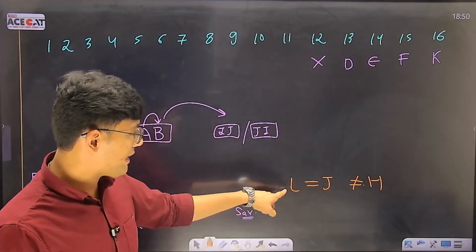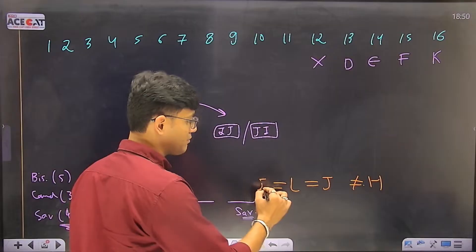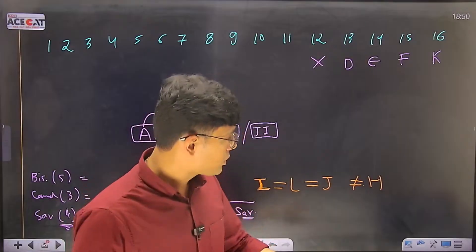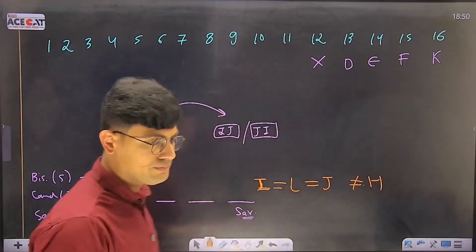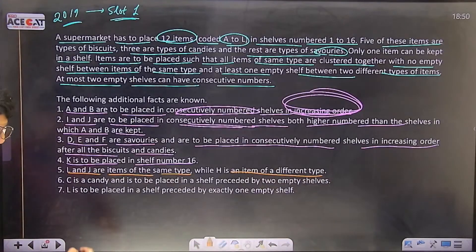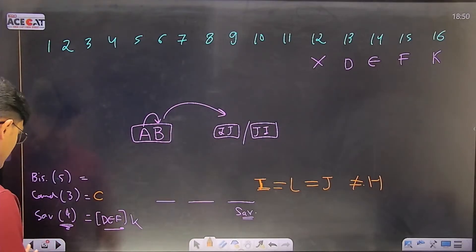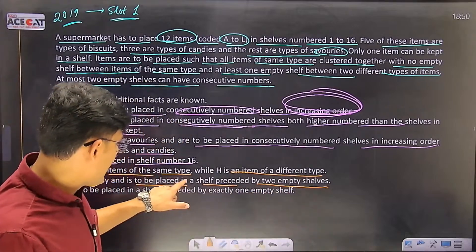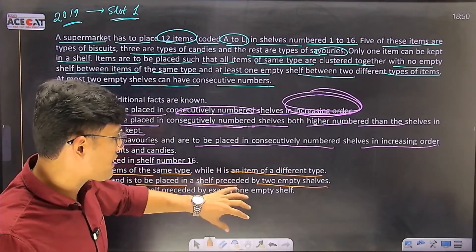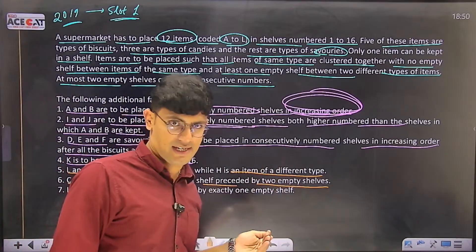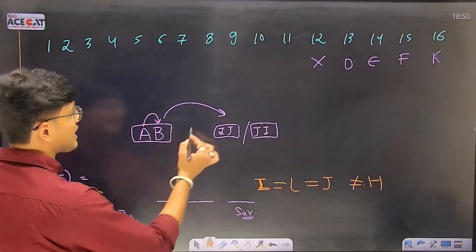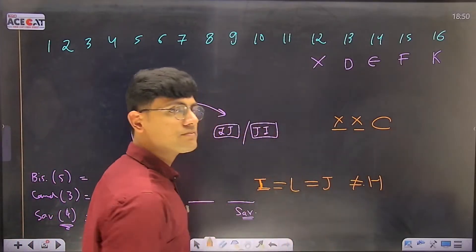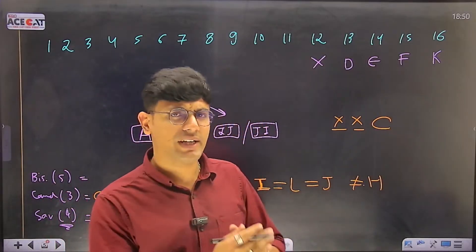L and J are items of the same type while H is an item of a different type. So L equals J in category, which is not equal to H. If K is of the same type as L, then I is also of the same type because I and J are consecutive. So I, J, L form a group while H doesn't belong to that group. C is a candy, and C is to be placed in a shelf preceded by two empty shelves.